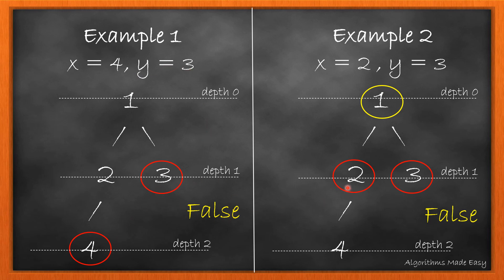In example 2, the depth is same but the parent is also same so we return false.